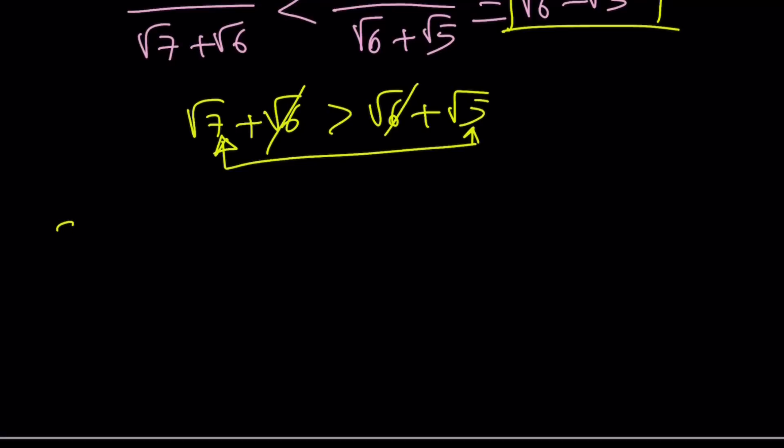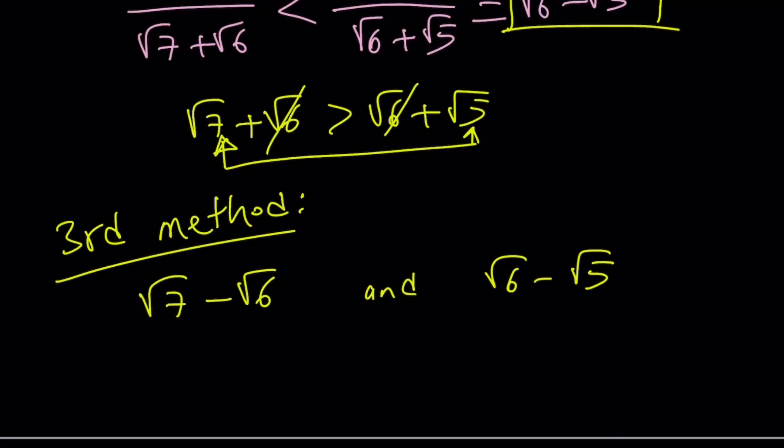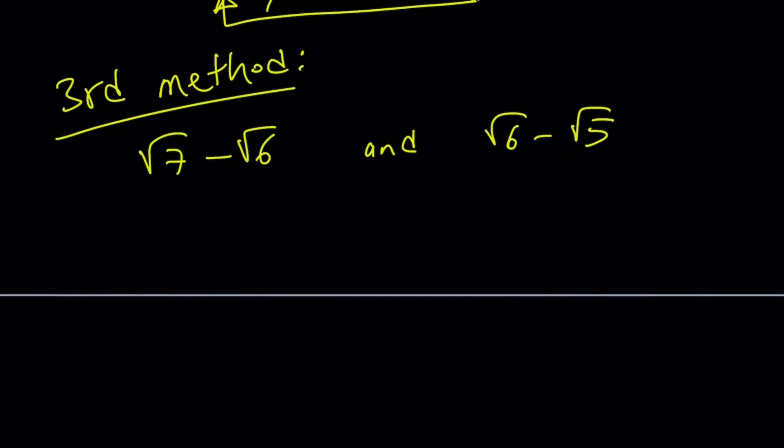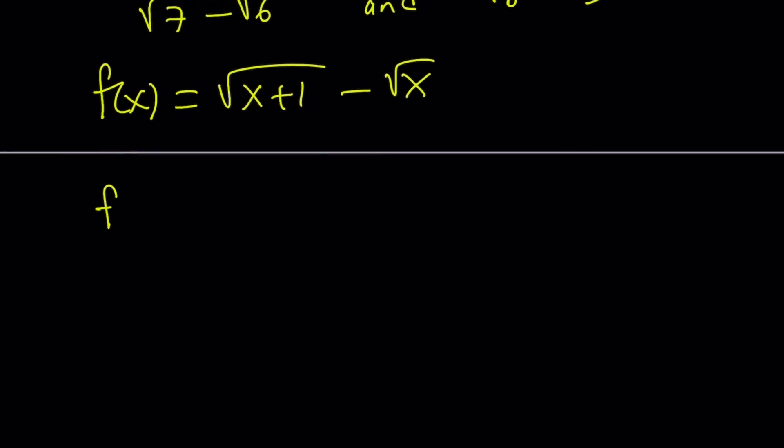All right. Third method. Like I said earlier, I'm going to be presenting four methods, so here's the third one. Again, we're comparing root 7 minus root 6 and root 6 minus root 5. And obviously, you can use a calculator and look at the numerical values, but that's not the point. You don't have access to a calculator. How do you compare these numbers on a test? So here's what we're going to consider. f of x equals square root of x plus 1 minus the square root of x. First of all, we're going to look at the behavior of this function. And we're going to differentiate it. If you differentiate this function, you get 1 over 2 root x plus 1 minus 1 over 2 root x. If you make a common denominator, you get root x minus root x plus 1 divided by 2 times root x times root x plus 1.